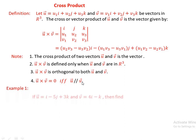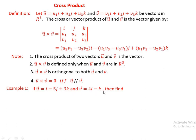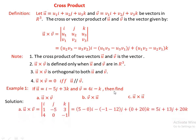For example, let vector u = i minus 5j plus 3k and vector v = 4i minus k. Find: (a) u cross v, (b) v cross u, (c) u cross u. Using the definition, u cross v equals the determinant of [i, j, k; 1, -5, 3; 4, 0, -1], where [1, -5, 3] are the components of u and [4, 0, -1] are the components of v.